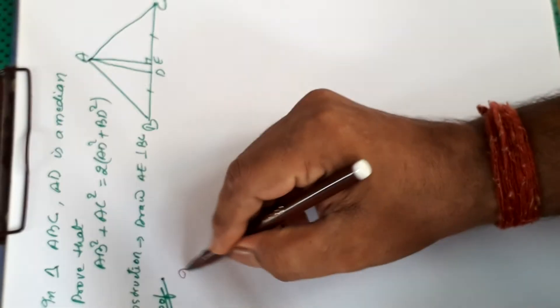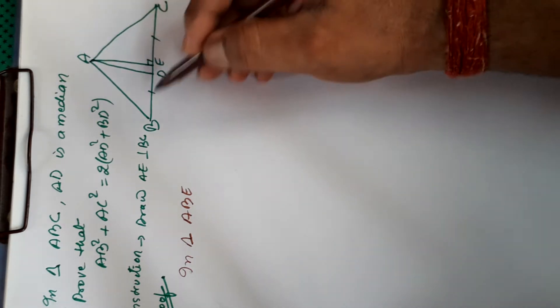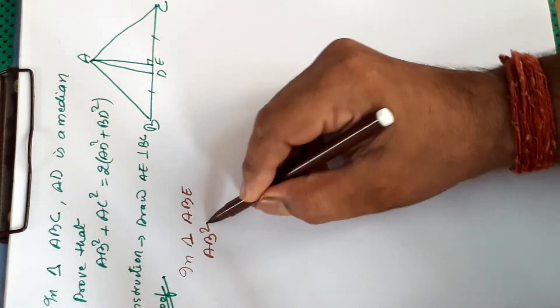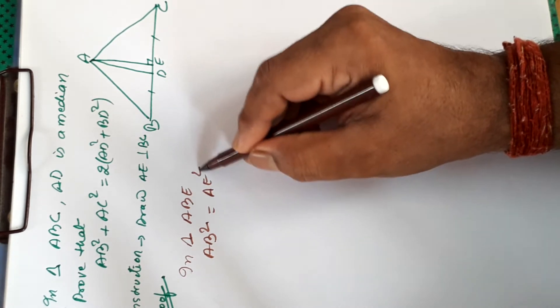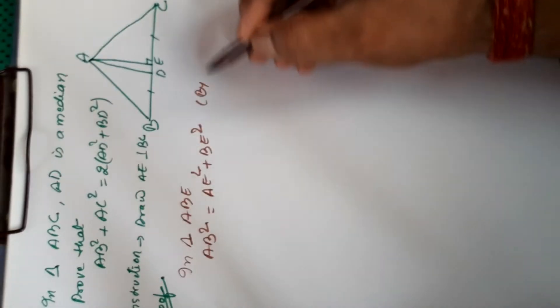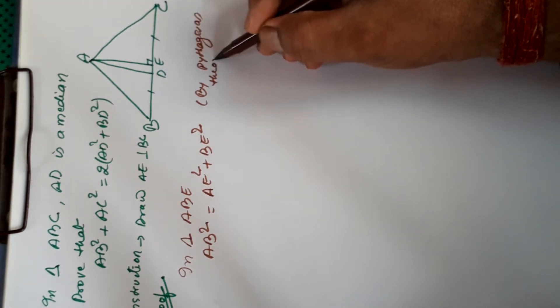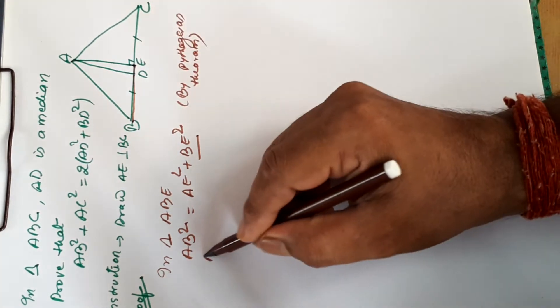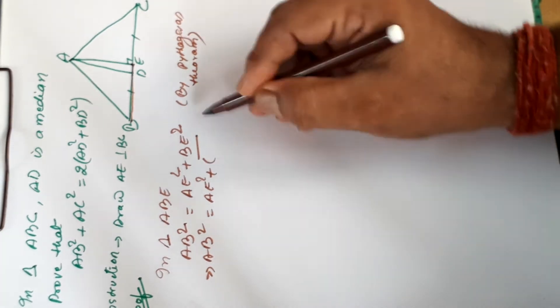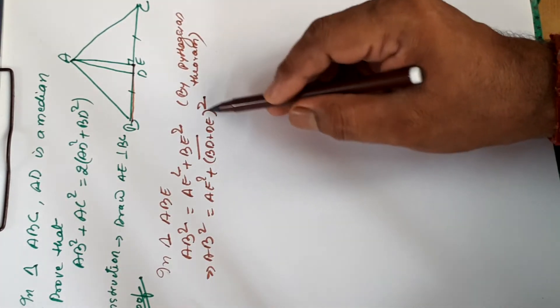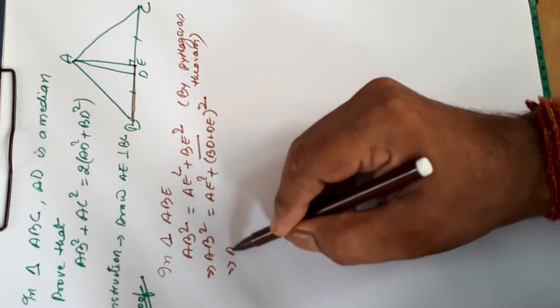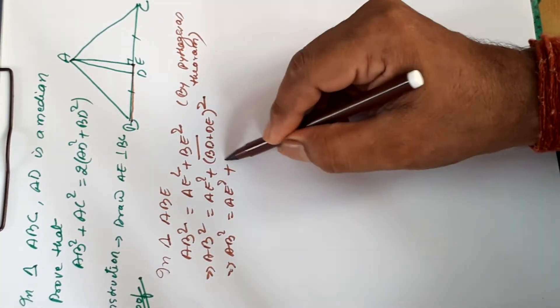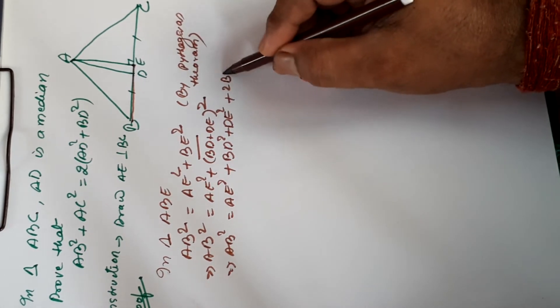First of all we will take triangle ABE. In right triangle ABE, AB square is equal to AE square plus BE square by Pythagoras theorem. Now in place of BE we can write BD plus DE. So AB square is equal to AE square plus BD plus DE whole square. Now we will open this bracket using the identity A plus B whole square. It becomes AB square is equal to AE square plus BD square plus DE square plus 2 BD into DE.